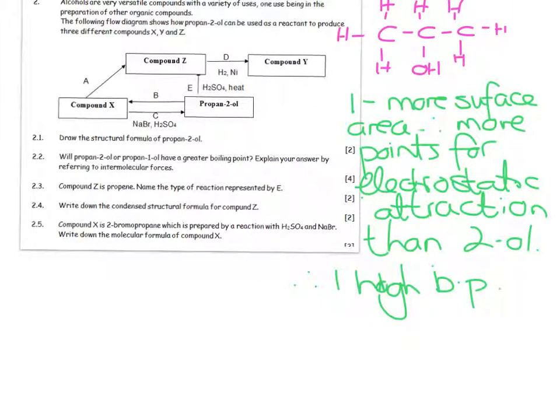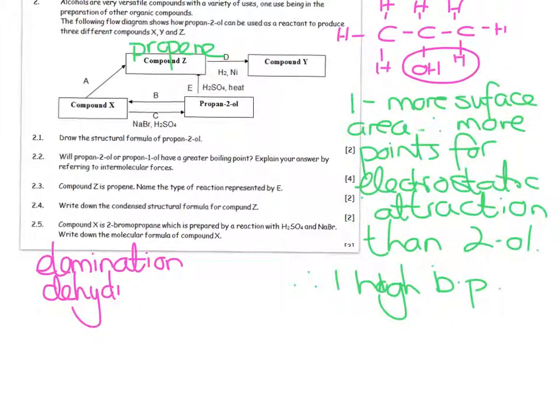Compound Z is propene. Name the type of reaction represented by E. Propene means I'm going to land up with a double bond, which means it must be an elimination reaction. We can get more specific though. We are going to be getting rid of the OH group and one hydrogen, so it is actually a dehydration because we are going to lose a water. That's a more specific answer.